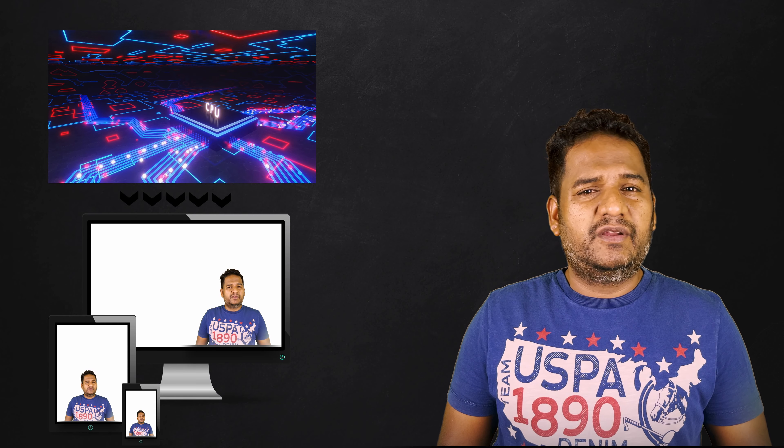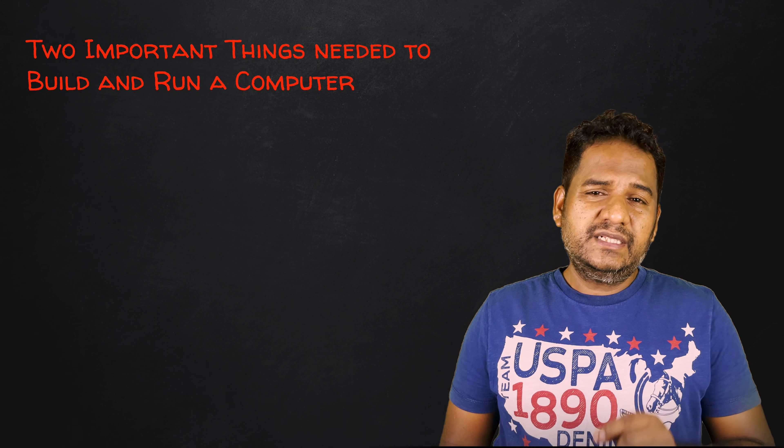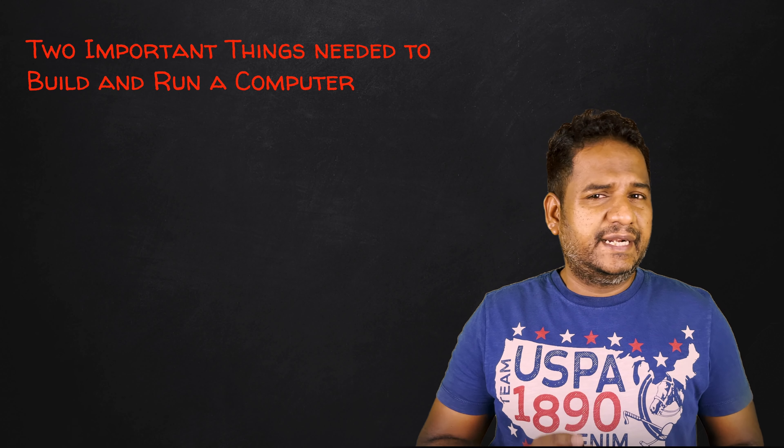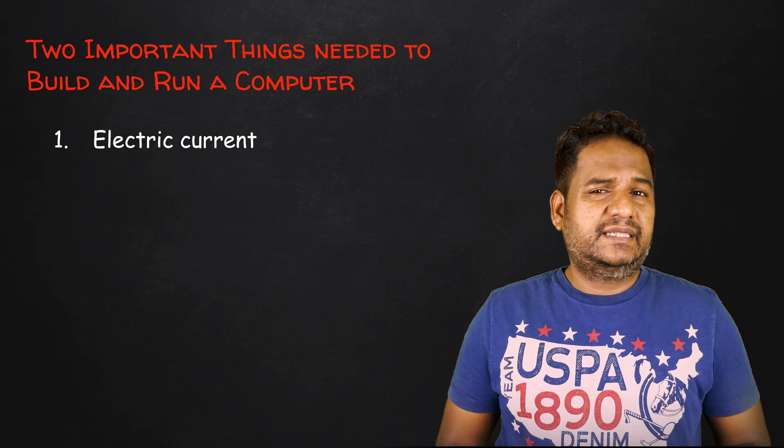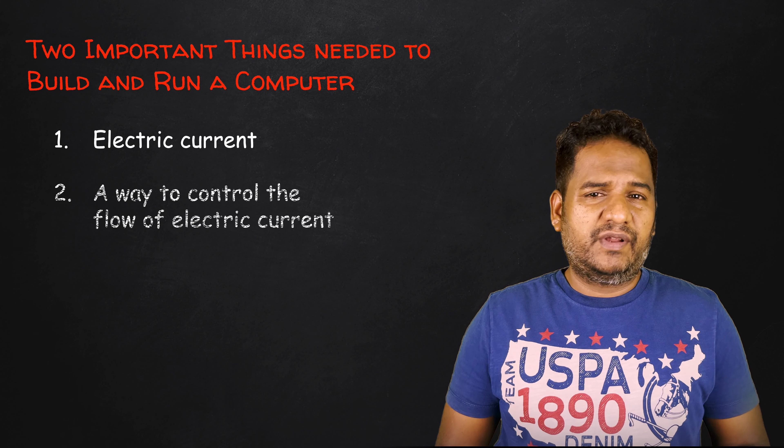In other words, you are watching this video because your computer or mobile phone is manipulating or controlling the flow of electric current in such a way to show me on your device screen. In summary, there are two important things needed to build and run a computer: electric current and the way to control the flow of electric current.